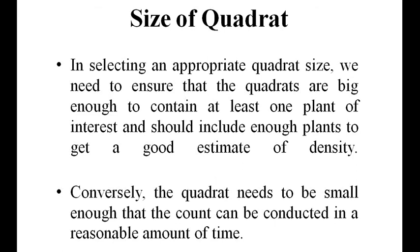In selecting an appropriate quadrat size, we need to ensure that the quadrats are big enough to contain at least one plant of interest and should include enough plants to get a good estimate of density. Conversely, the quadrat needs to be small enough that the count can be conducted in a reasonable amount of time.